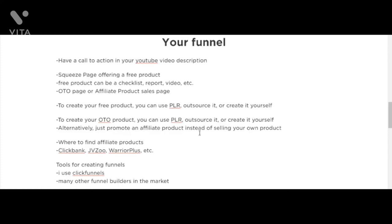The free product — aside from being a checklist — can also be a report, a video, or many other forms. To create these free products, you can do it yourself or hire people on Fiverr and other sites. You could also buy products that have Private Label Rights, or PLR — products that others create and then sell the rights to edit and resell or give away, depending on the license. The same applies to creating the next step of your funnel, which is the OTO or upsell page, where you sell leads a product once they've signed up.